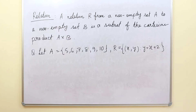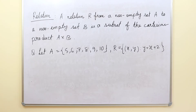Let us discuss the definition of relation. A relation R from a non-empty set A to a non-empty set B is a subset of the Cartesian product A cross B. Now let us take a question: Let A = {5, 6, 7, 8, 9, 10} where R = {(x, y)} and the relation is that y = x + 2.